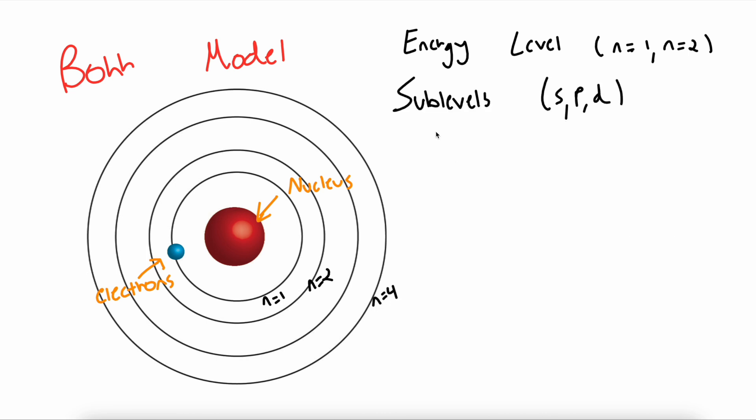After energy levels, we have our sublevels. Sublevels are inside of these energy levels, and they hold a certain amount of electrons. They are denoted by the letters s, p, d, after that comes f, g, h, and so on.